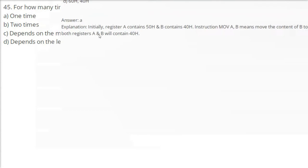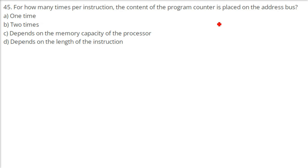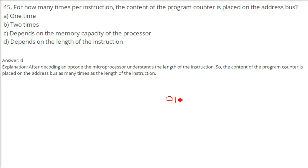For how many times per instruction is the content of the program counter placed on the address bus? This is a tricky question — the answer depends on the length of the instruction. When the opcode is decoded, the microprocessor understands whether it is 1-byte, 2-byte, or 3-byte, and how many fetches, T-states, and operations are needed. The content of the program counter is placed on the address bus as many times as the length of the instruction — it cannot be determined without knowing the instruction.